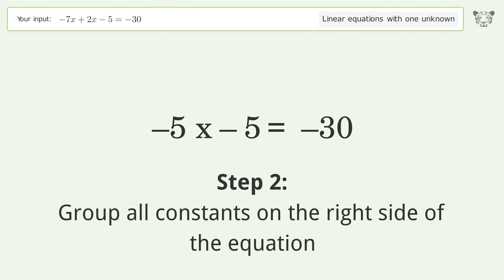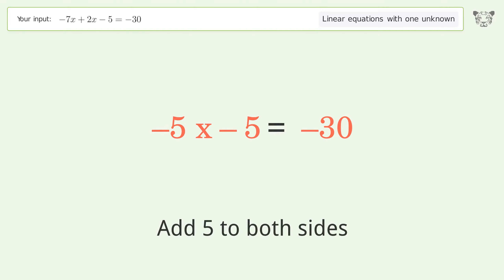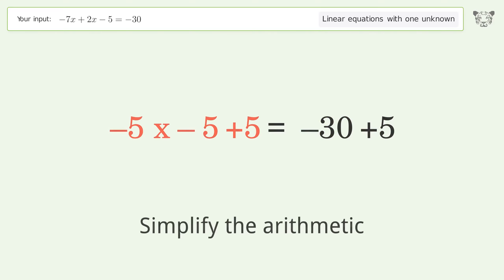Group all constants on the right side of the equation. Add 5 to both sides. Simplify the arithmetic.